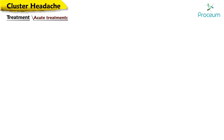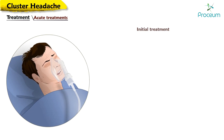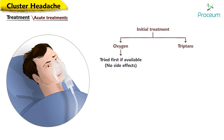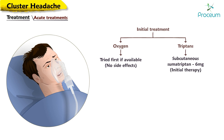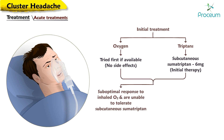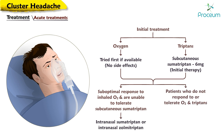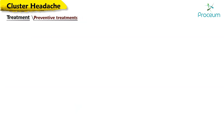For patients with acute cluster headache, clinicians recommend initial treatment with either oxygen or triptans. Oxygen should be tried first if available, since it has no side effects. Otherwise, subcutaneous sumatriptan 6 mg can be used as initial therapy for patients with no contraindications. For patients with a suboptimal response to inhaled oxygen who cannot tolerate subcutaneous sumatriptan, alternatives include intranasal sumatriptan or intranasal zolmitriptan. For those who do not respond to or tolerate oxygen and triptans, alternatives include intranasal lidocaine, oral ergotamine, and intravenous dihydroergotamine. Subcutaneous sumatriptan and oxygen inhalation remain first-line treatments for an acute cluster headache attack.